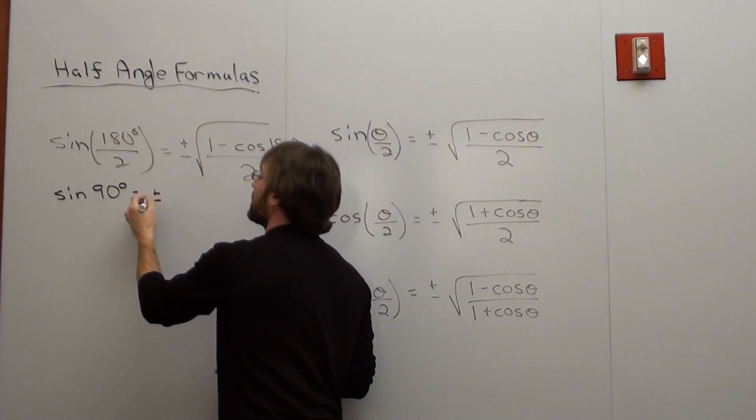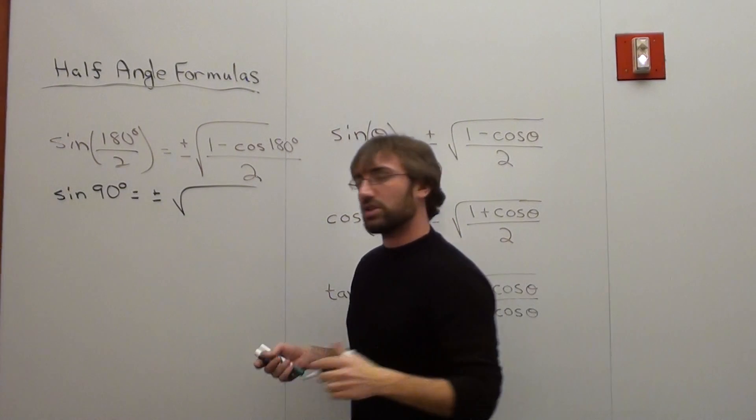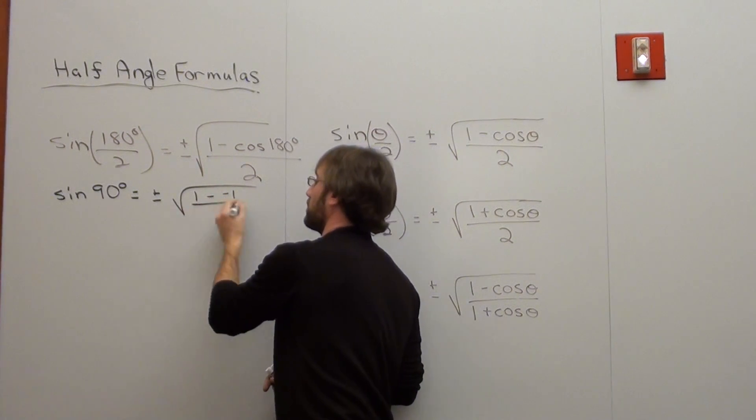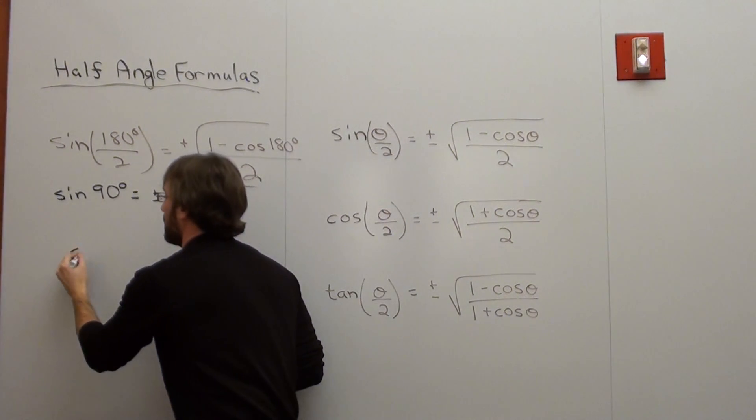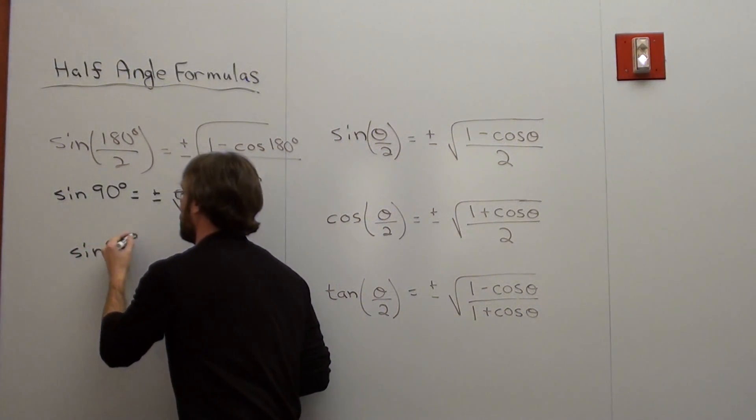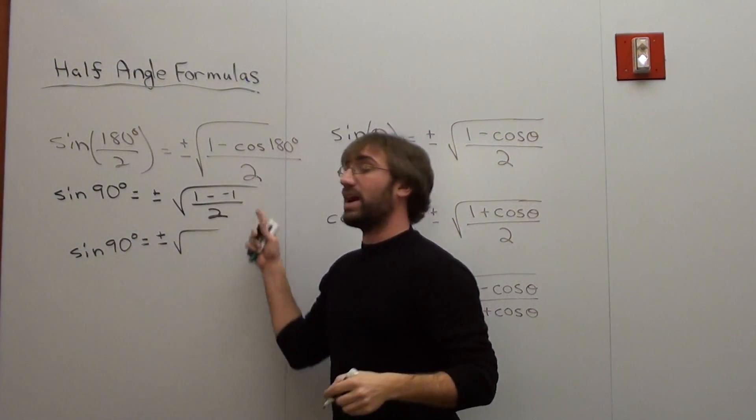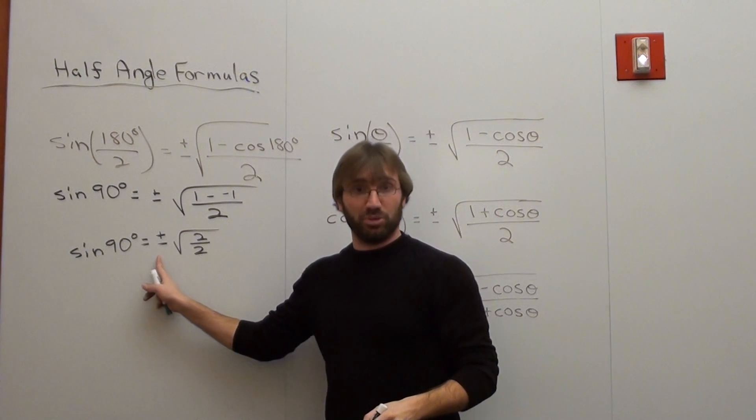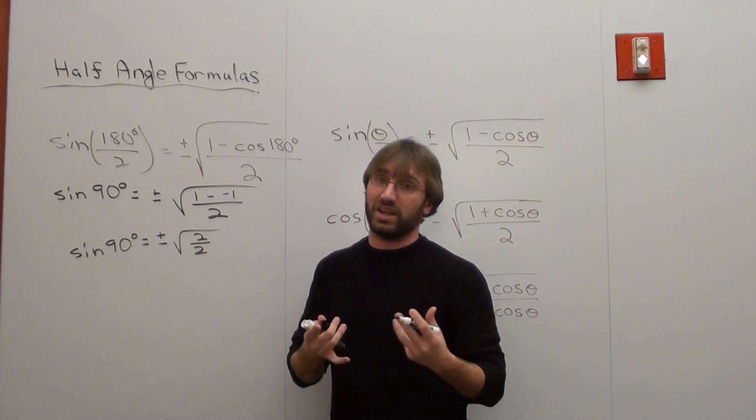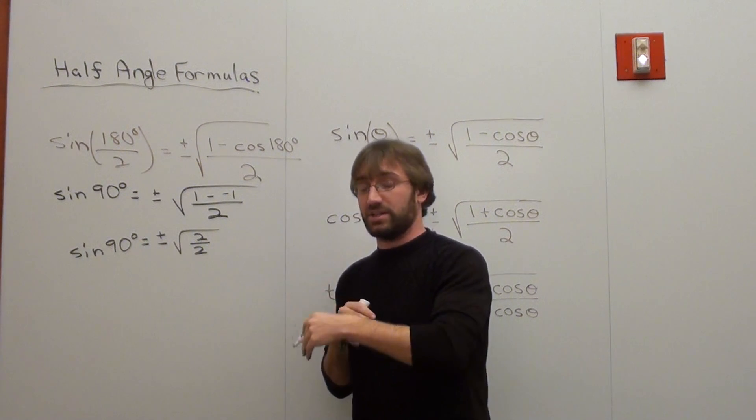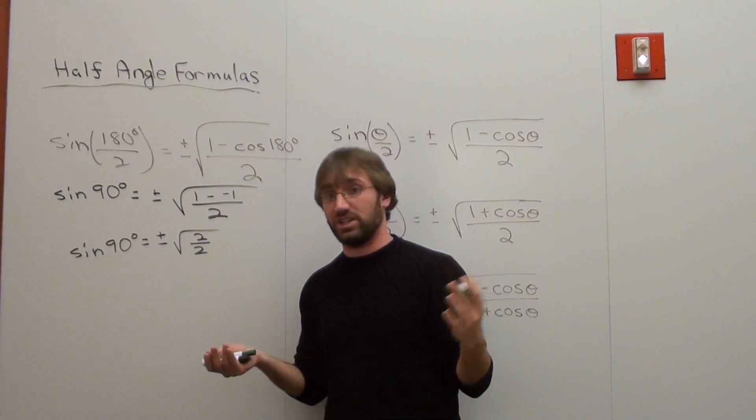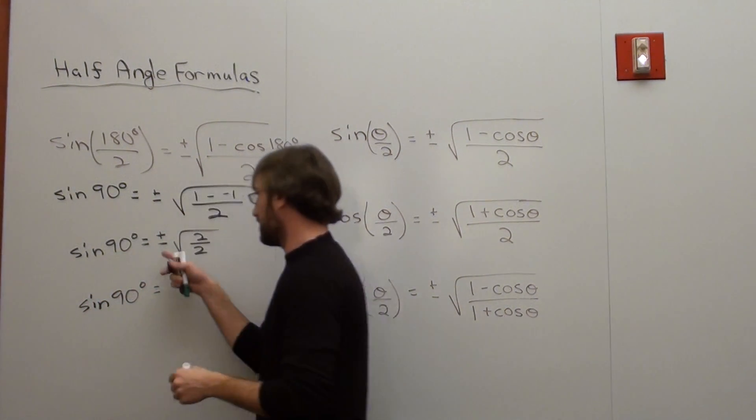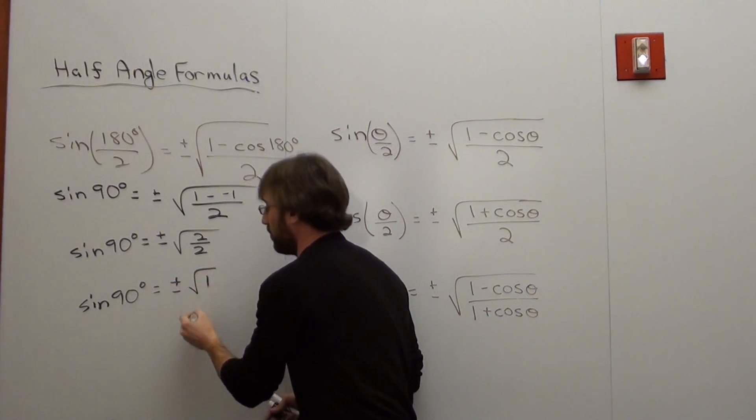This is going to be plus or minus square root of 1 minus the cosine of 180. Well, the cosine of 180 is negative 1, all over 2. 1 minus negative 1 is actually 1 plus 1, which is 2 over 2. Now this is going to cause a little bit of a problem. And there's something that you have to recognize when you do this. You know when the cosine is positive or negative and when the tangent is positive or negative. So the sine of 90 degrees is equal to plus or minus square root of 1.